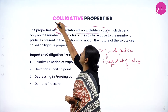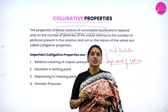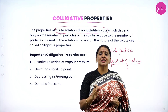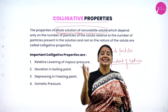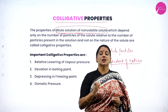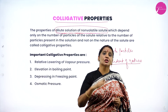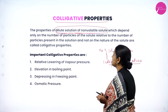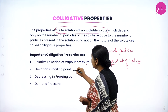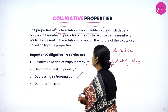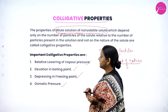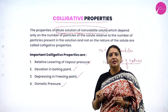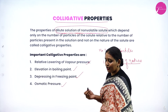Such properties are called colligative properties. Colligative properties are the properties of dilute solutions containing non-volatile solutes that depend upon the number of solute particles and are independent of the nature of the solute particles. The four important colligative properties are: relative lowering of vapor pressure, elevation in boiling point, depression in freezing point, and osmotic pressure.